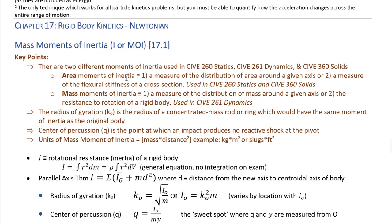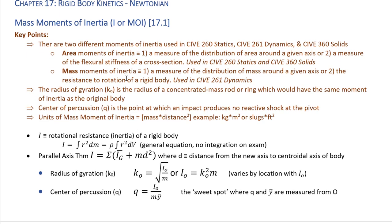Moving into chapter 17 proper, rigid body kinetics — we start with mass moments of inertia. There are two different kinds: area moments of inertia, used in statics and solids, versus mass moments of inertia, used in dynamics. The best definition of mass moments of inertia is the resistance to rotation of a rigid body. When rotating a body, it has resistance because mass is distributed over an area. Both types use the variable I, which is just the standard notation.